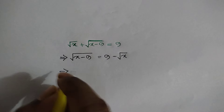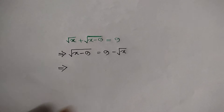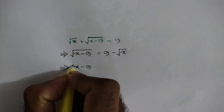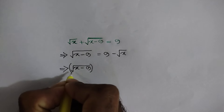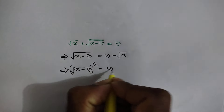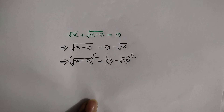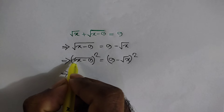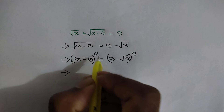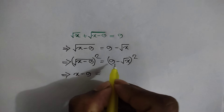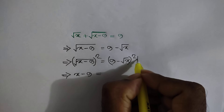Now squaring both sides, we will write square root of x minus 9, whole square, is equal to 9 minus square root of x, whole square. This square root and this square cancel out, so it will remain x minus 9 is equal to — here we can apply this rule.